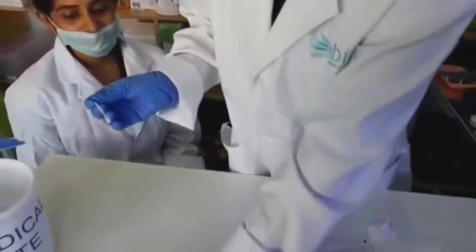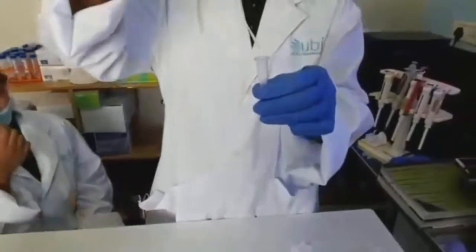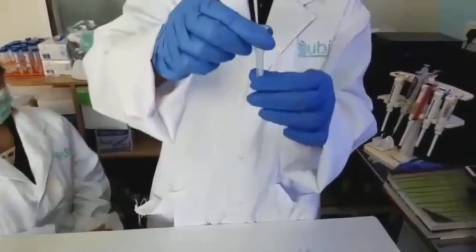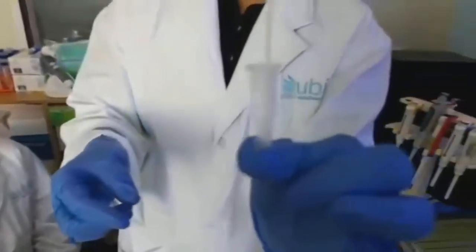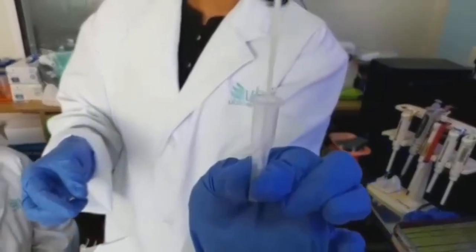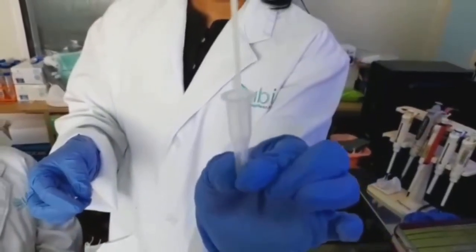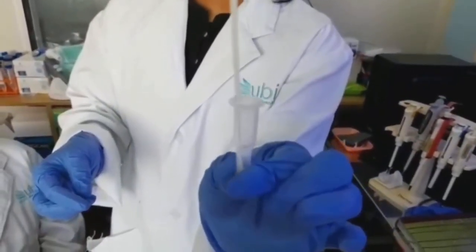After collecting the specimen according to standard procedures, put the swab specimen into the extraction tube. Rotate the swab for about 30 seconds and press the swab head against the tube wall to release the antigen in the swab.